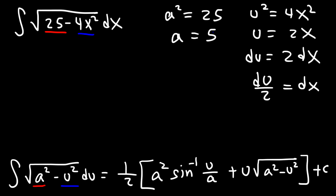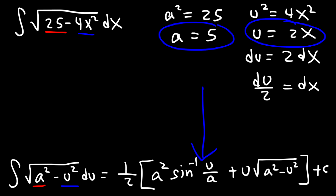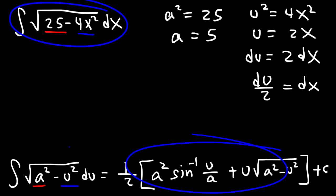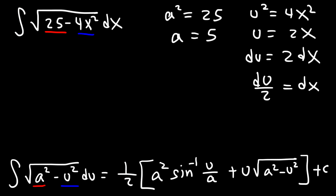Once you get the values of a and u, don't just plug them directly into the formula — you'll likely get the wrong answer unless du equals dx. You need to incorporate this factor of 2 by converting the integral from x to u first, then apply the formula. Watch out for that mistake.